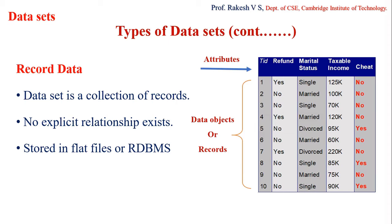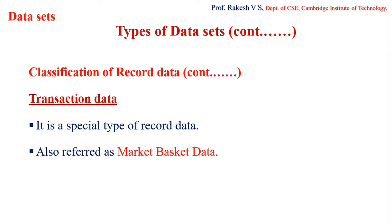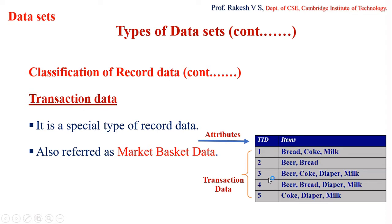There are several types of record data: transaction data, data matrix, and sparse data matrix. Transaction data is a special kind of record data where each data object has a set of items in it. It can be represented in tabular form with fields and records. Transaction data is also referred to as market basket data.